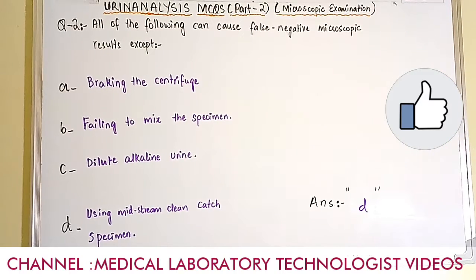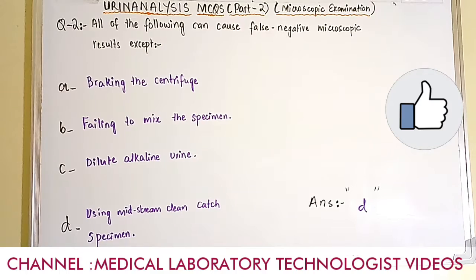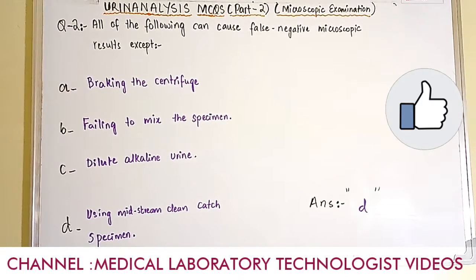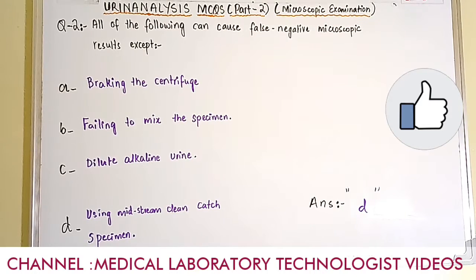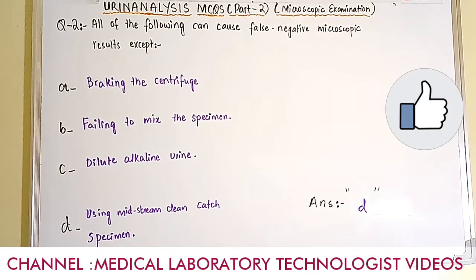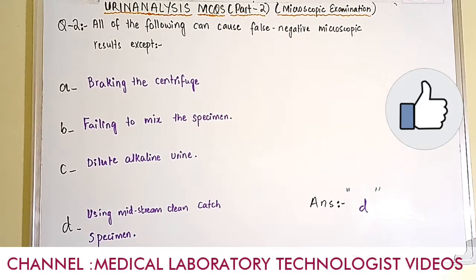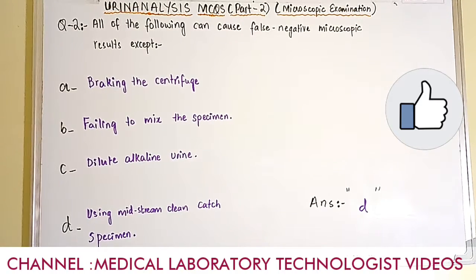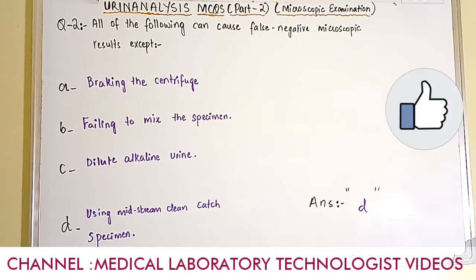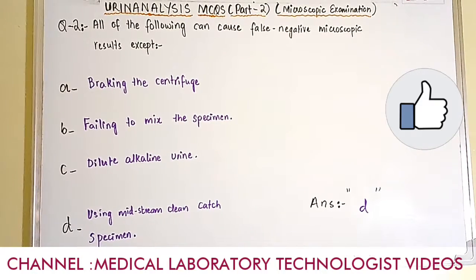Question number 2. All of the following can cause a false negative microscopic result except — meaning that option will not cause the false negative result. Option A: braking the centrifuge. Option B: failing to mix the specimen. Option C: dilute alkaline urine. Option D: using midstream clean catch specimen. The answer is option D, using midstream clean catch specimen. The other three options will cause a false negative result.